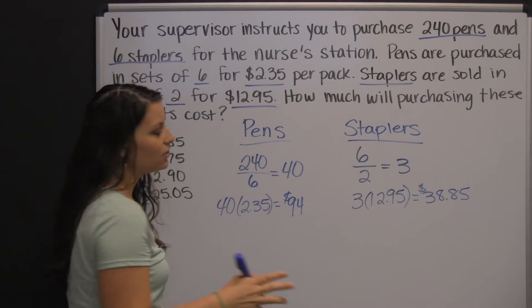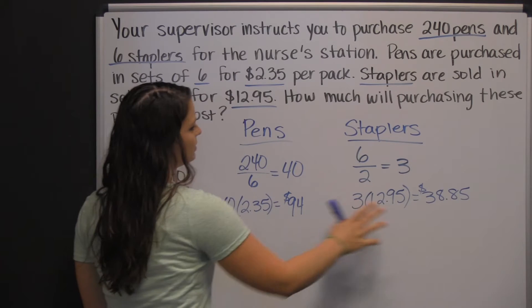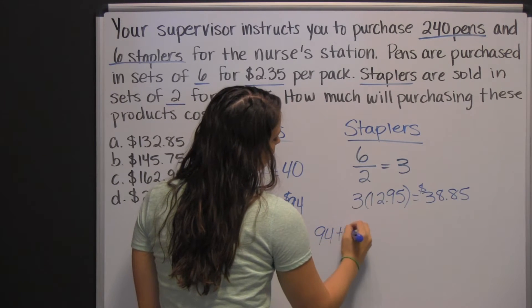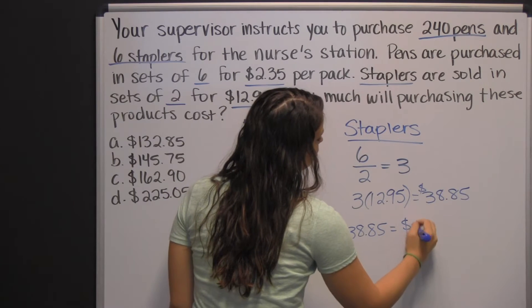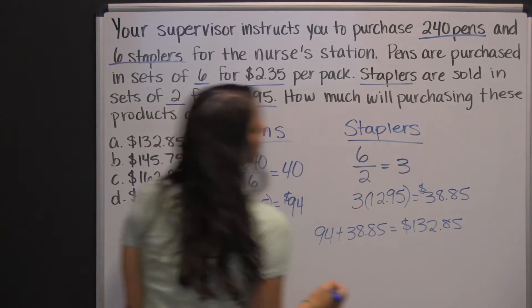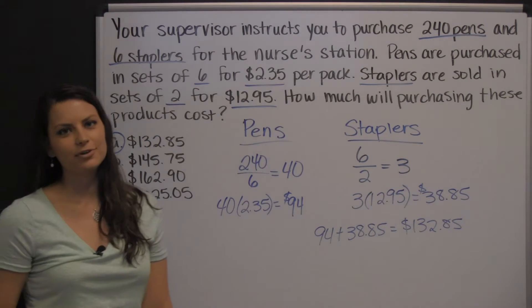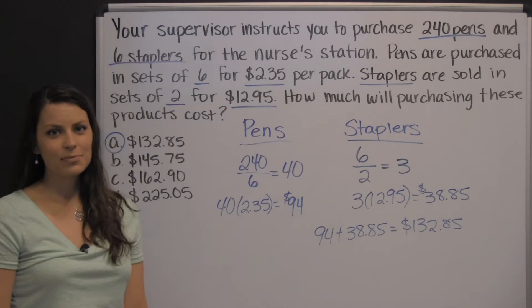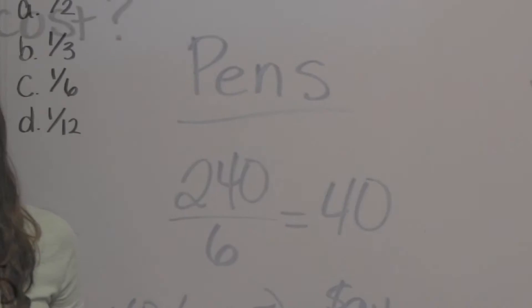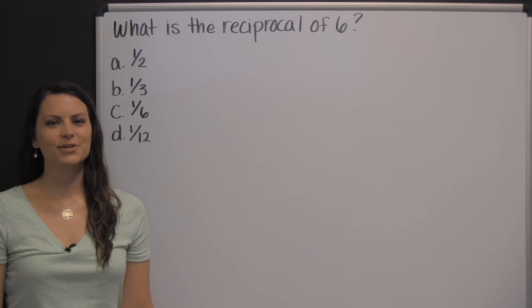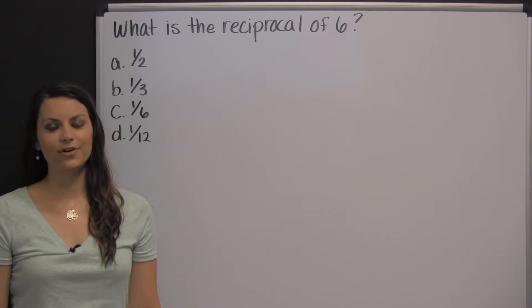Finally, we just need to add those two totals together to get our total for our pens and staplers. So, $94 plus $38.85 is $132.85. That would be your total for all your pens and staplers. There's one example of a word problem that you might encounter when taking the HESI. You will need to have some basic math skills for the HESI A2.